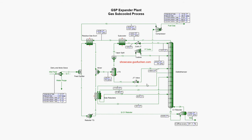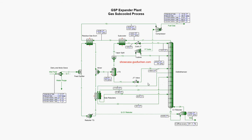Stream 21 and stream 23 are withdrawn in the middle of the column, and then both of them are reboiled in the side reboilers before returning back to the demethanizer. The reason for these two withdrawals is to increase the ethane recovery. NGL is extracted at the bottom of the tower.